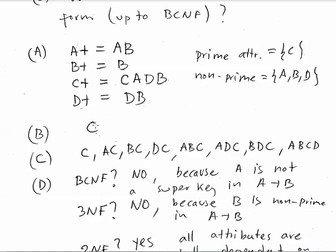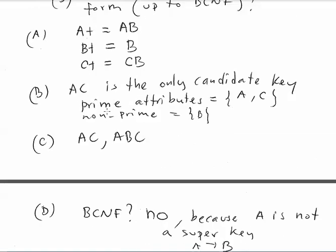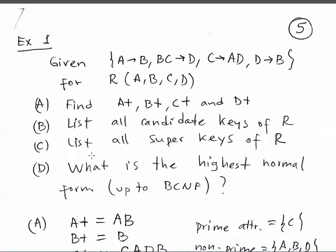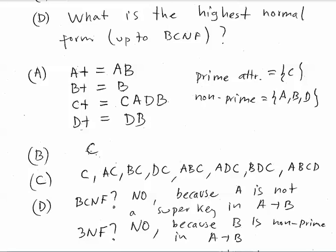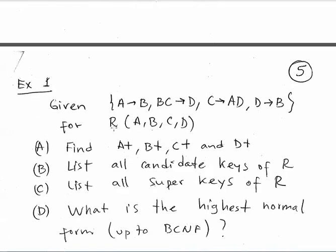Now we check 2NF. C is the candidate key and it is just one single attribute, so every non-prime attribute will be fully dependent on it — because you cannot take away any attribute from a single-attribute key. This is different from the previous example where the candidate key was AC. When the candidate key has only one attribute, there is nothing to remove, so all non-prime attributes are fully dependent on C. Therefore, this table is in 2NF. R is in 2NF, which means it's not an ideal table and we'll propose a decomposition to bring it to BCNF.